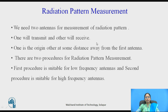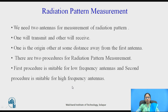We need two antennas for measurement of radiation pattern. One will transmit, the other will receive. One is at the origin, the other at the same distance away from the first antenna. There are two procedures for measurement of radiation pattern. The first procedure is suitable for low frequency antenna measurements, and the second procedure is suitable for high frequency antennas.